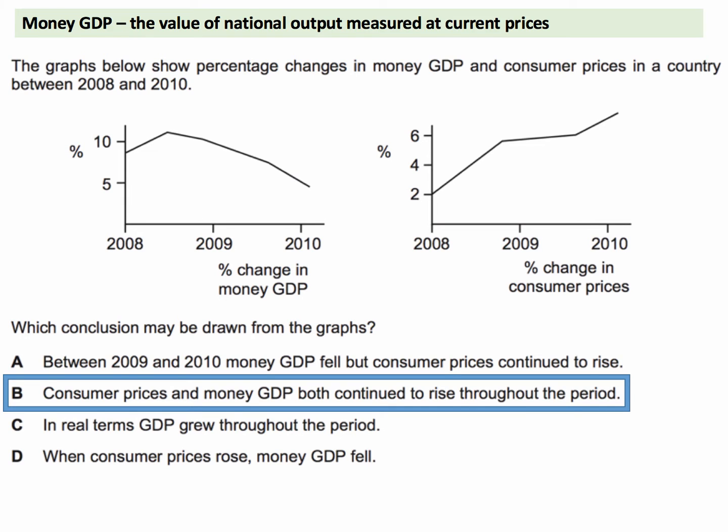Money GDP is the value of the output of goods and services nationally, measured at current prices — we haven't made an adjustment for inflation. Sometimes known as nominal GDP, but most of the time people call it money GDP. The data shows that crucially we're looking at the percentage change in both variables — money GDP and consumer prices — and that really is the key to getting this question right.